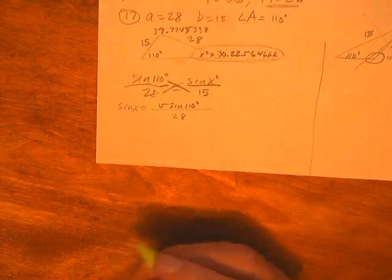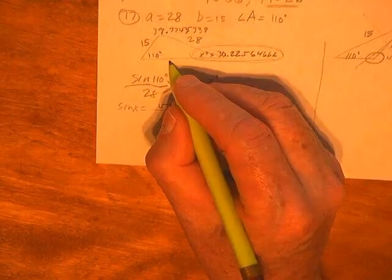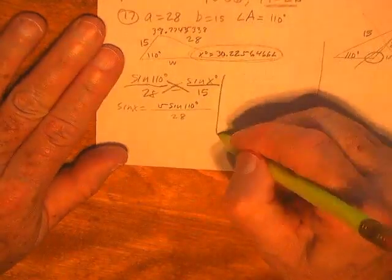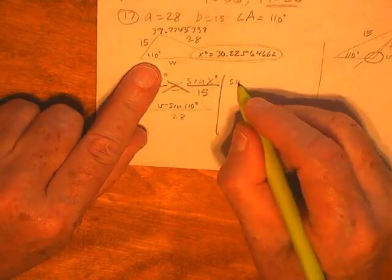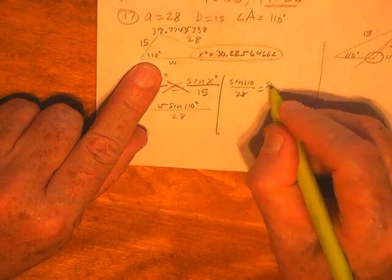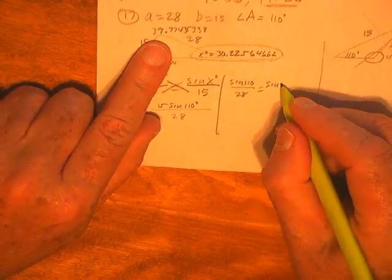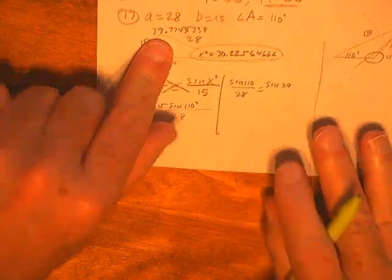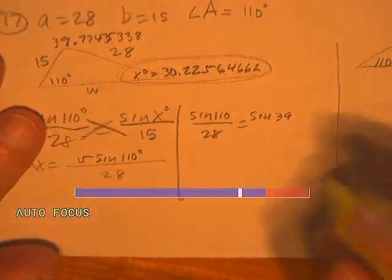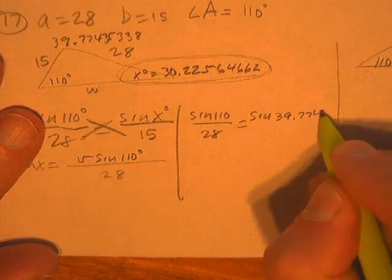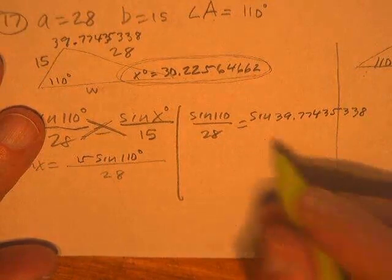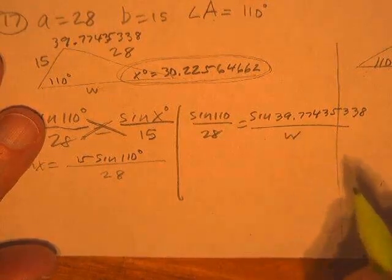So, that's pretty good. And then I just need side W over here, whatever that is. So, I need to write another one of these. Sine 110 over 28. Sine up, and I want to use the 39, I want to use the 39 number, 39, 77, 43, 53, 38 over W.